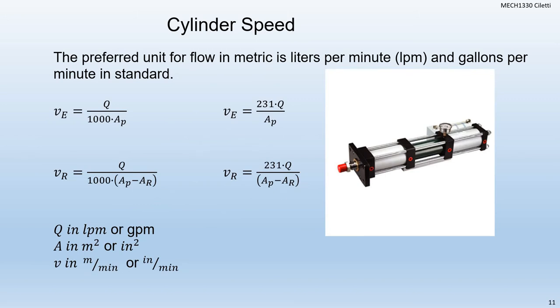Next we want to talk about cylinder speed. Speed and velocity mean the same thing. The preferred unit for flow in metric is liters per minute, and gallons per minute in imperial. Notice that 1,000 is back for metric and 231 is back for our standard or imperial units from Chapter 2. Now we're not finding the flow, we're finding the velocity. Q is the flow itself. The V subscript E is the extension velocity — the speed of the cylinder when extending. The V subscript R is the speed of the cylinder when retracting. Notice we have to find the difference in the areas when retracting, just like we had to use the difference in area when finding the force or pressure to retract.